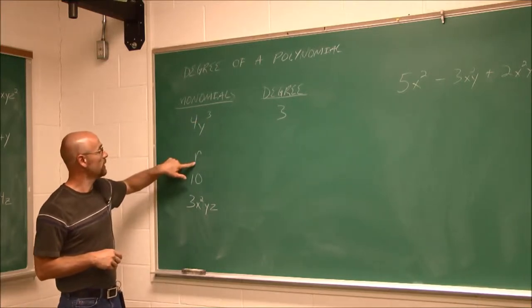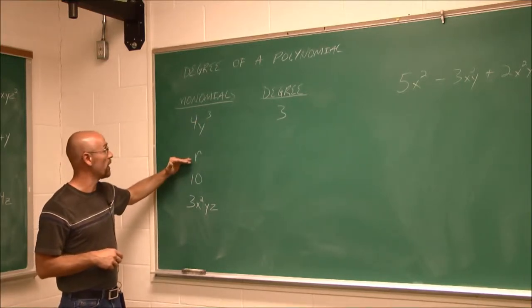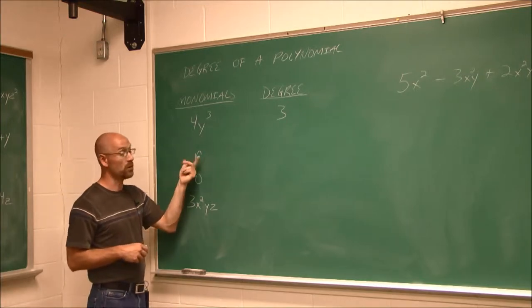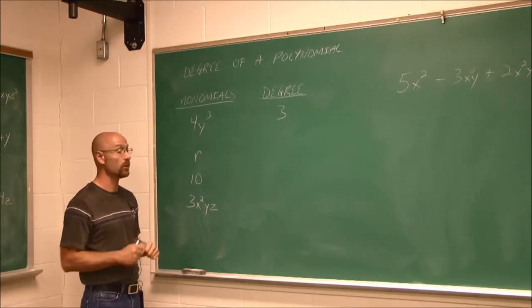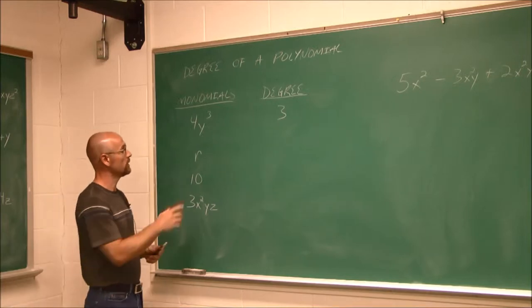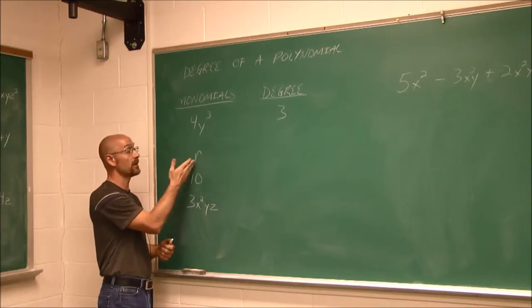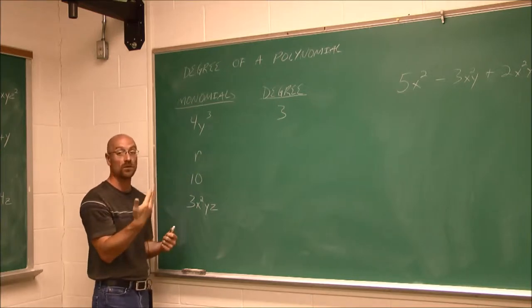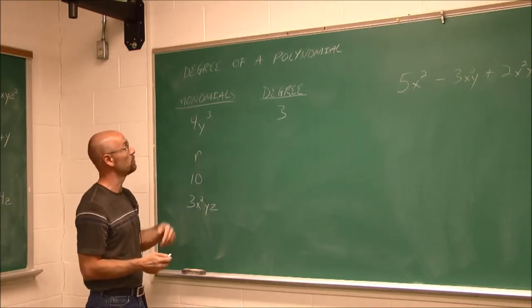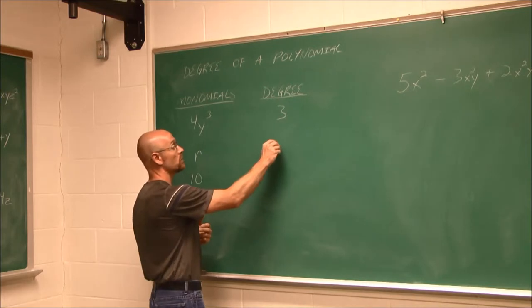If we look at this monomial here, we have an r. This is our variable, because we don't know what r is. It's just holding the place of a number. What is its power? Well, if we don't have a power written on a variable, we have to assume there is at least one of them. So its power is 1. The exponent here would be 1. So this is a first degree polynomial.